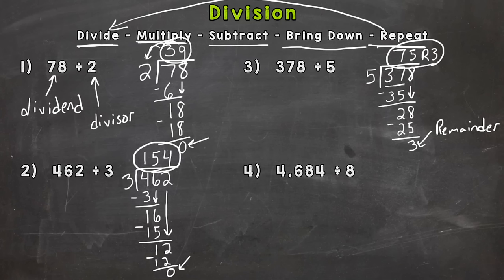So let's go to number 4 here. We have a four digit dividend and a single or one digit divisor. So 4,684 divided by 8. So let's start with how many 8s can we pull out of 4 or 4 divided by 8. We can't do that and get a whole number. So we need to jump over to the 46.